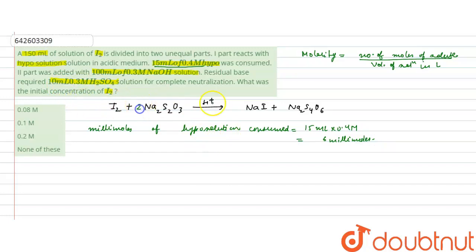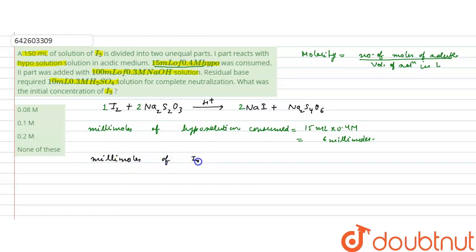This is the balanced reaction. If one mole of iodine is consumed, 2 moles of hypo solution are consumed. We have 6 millimoles of hypo consumed, so millimoles of iodine consumed = half of 6 = 3 millimoles, since they are in 1:2 stoichiometry.